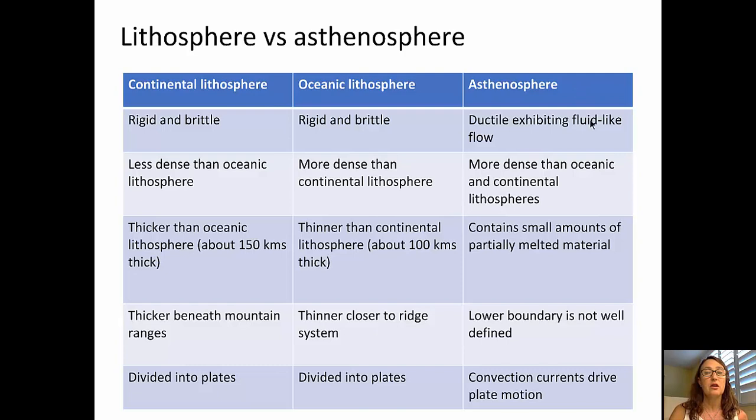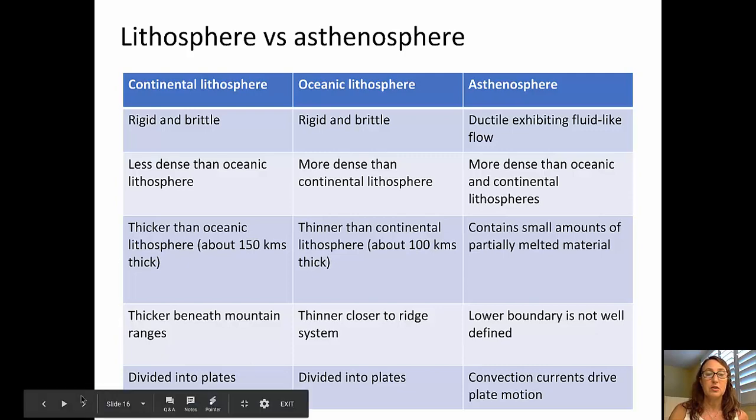Contrasting that with the asthenosphere, which is ductile, which exhibits a fluid-like or plastic-like flow, it's more dense than either the oceanic or continental lithospheres, it contains small amounts of partially melted material. The lower boundary of the asthenosphere is not well-defined, and there are convection currents there that drive plate motion.